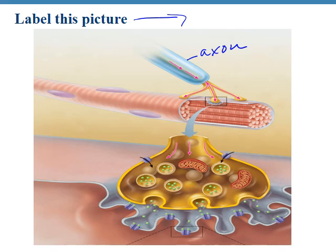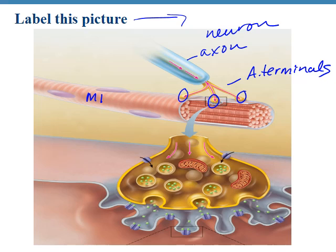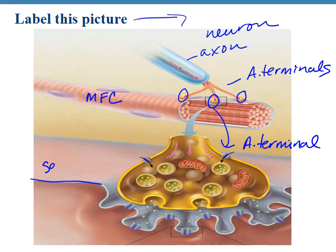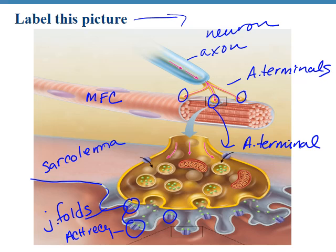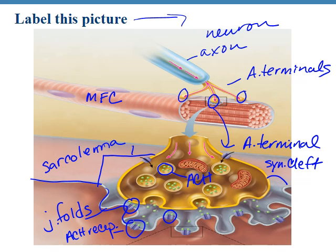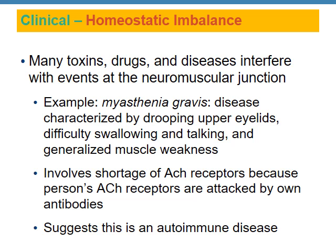Looking at the labeled picture: this is the axon of the neuron and these are the axon terminals. This is a muscle fiber cell, and here is an enlarged axon terminal. The outer lining is the sarcolemma. These are the junctional folds, and here we have the acetylcholine receptors. Inside the vesicles of the axon terminal, we have the neurotransmitter acetylcholine. This space is the synaptic cleft. The neuromuscular junction is made up of the axon terminal, junctional folds, and the synaptic cleft.